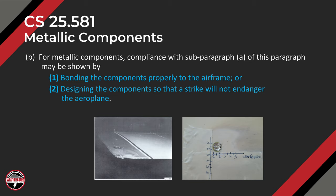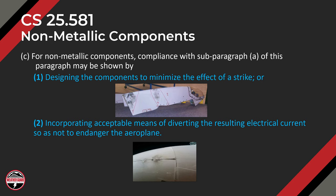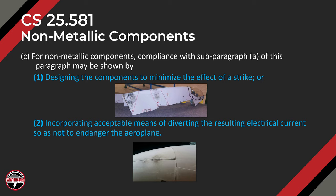Those are two extreme examples of a typical and a severe lightning attachment. For non-metallic components, covered in Part C, compliance with subparagraph A may be shown by: 1, designing the components to minimize the effect of a strike, or 2, incorporating acceptable means of diverting the resulting electrical current so as not to endanger the airplane. For option 1, we're showing a composite wingtip made out of carbon fiber that has expanded metal foil on it, designed to minimize the effect of a strike and prevent maximum damage to the composite structure.